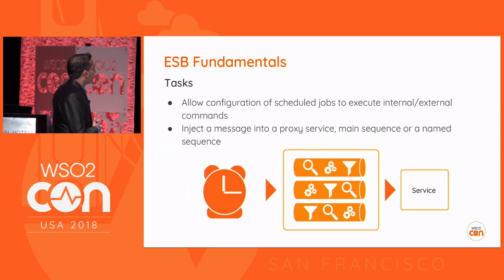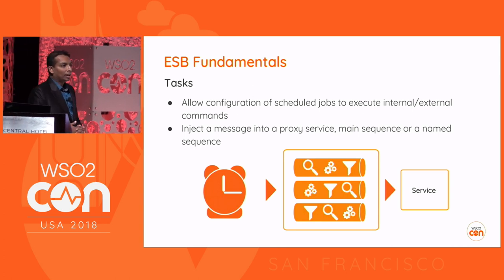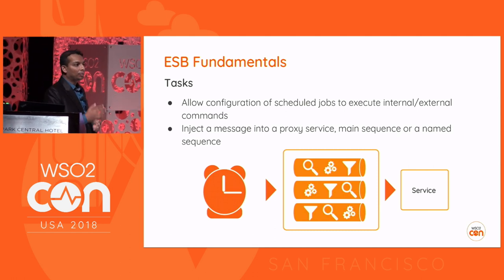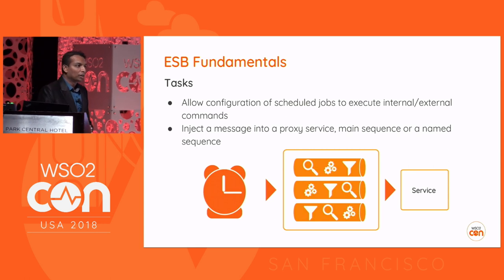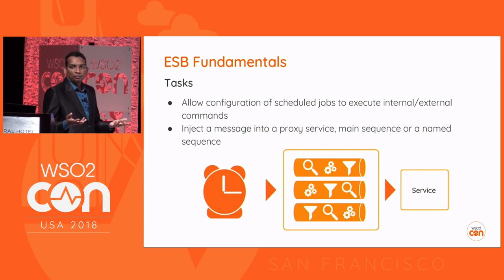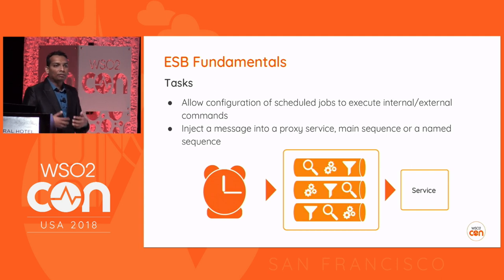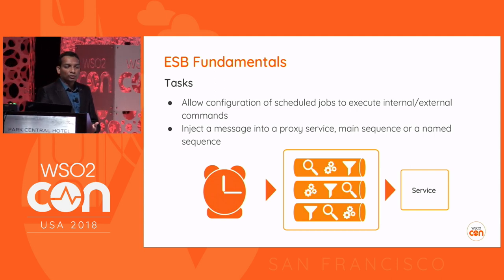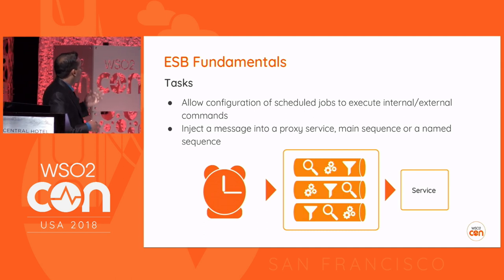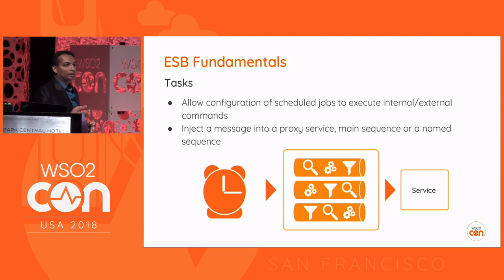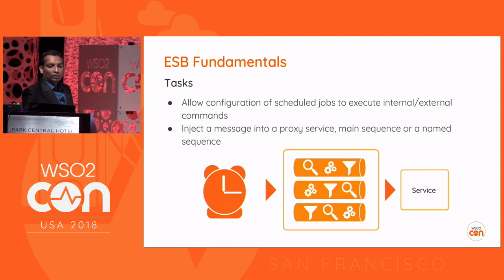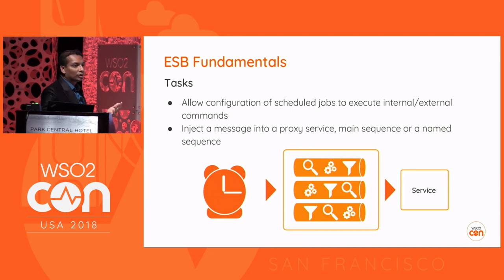All three types — proxy services, APIs, and inbound endpoints — are triggered from an external party, so there has to be a client initiating the process. But if we need to invoke mediation logic every day at midnight without a client, we use the concept of a task. By using a scheduled task, we can configure ESB to trigger some mediation logic at a given time period. Those are the four different ways a message can get into the ESB runtime.